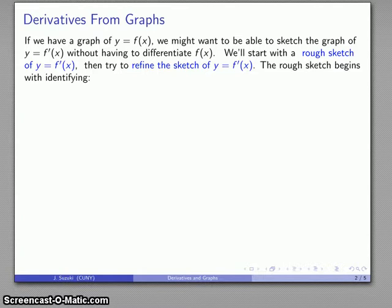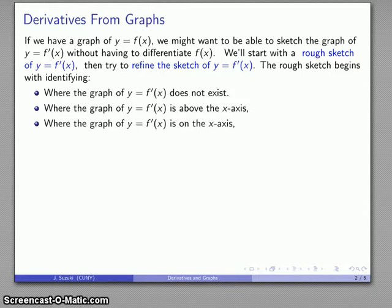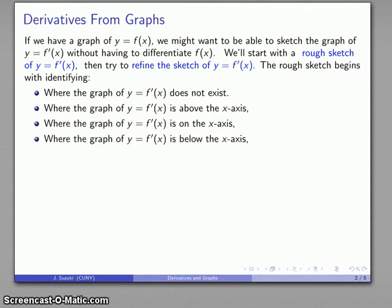There are three important components we want. First, identify where the graph of y equals f prime of x does not exist — where there are gaps, places where the derivative fails to exist. Second, where the graph of y equals f prime of x is above the x-axis, meaning y values are positive and f prime is positive. Third, where the graph is on the axis — y value is zero, derivative is zero — and lastly where the graph is below the x-axis, meaning y is negative and the derivative is negative.